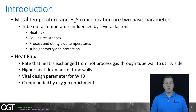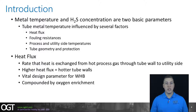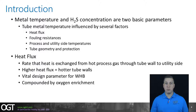Metal temperature and H2S concentration are the two basic parameters that determine the rate of sulfidic corrosion, but there are several factors that go into determining what the tube metal temperature actually is. These factors include the heat flux, fouling resistances, both the process side and utility side temperatures, tube geometry — meaning whether it's a triangular pitch versus a square pitch and how tight those pitches are — along with the protection of those tubes at the front of the waste heat boiler, meaning the refractory and/or ferrules at the tube-to-tube-sheet joint.